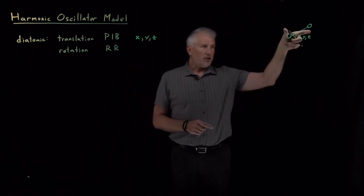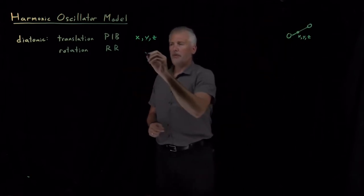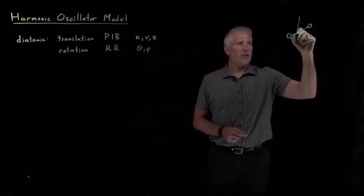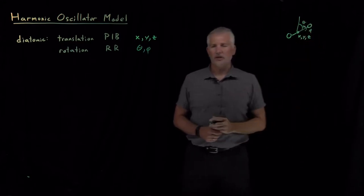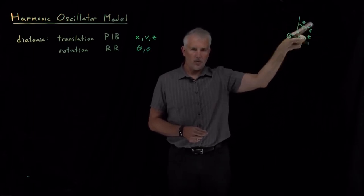The rotation of the molecule, as the molecule rotates in this direction or this direction or some other direction, we've used theta and phi to describe those coordinates. The molecule, we've allowed it to move around in x, y, and z. We've allowed it to rotate in theta and phi.